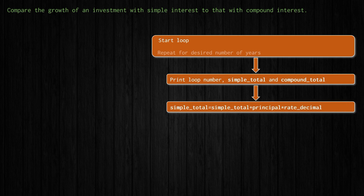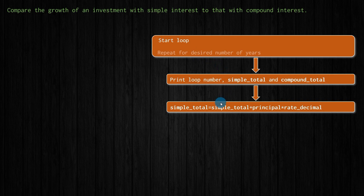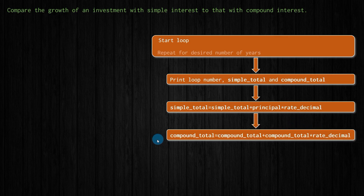Then I'm going to update the totals. With simple interest, we're always adding the same value — a percentage of our principal. So I take the current simple_total and add principal times rate_decimal. I call it rate_decimal because I want it in decimal form. This gives the new simple_total. Each iteration adds the same constant amount: principal multiplied by the rate.